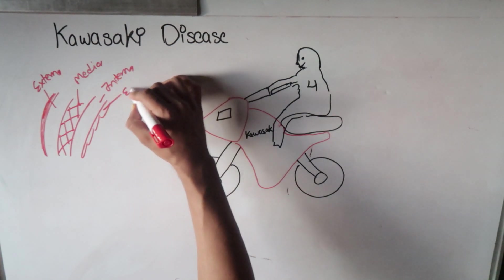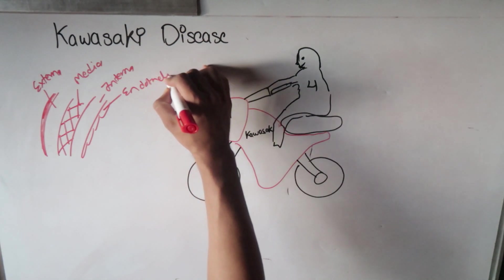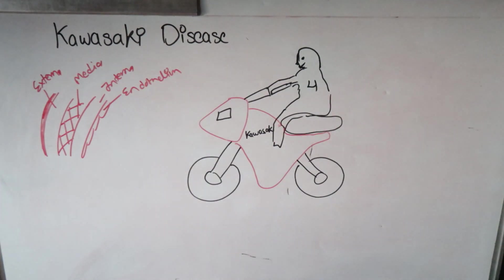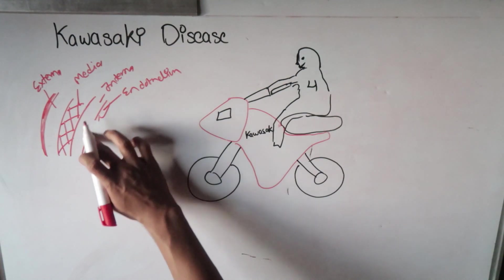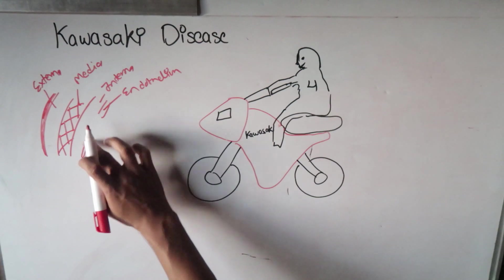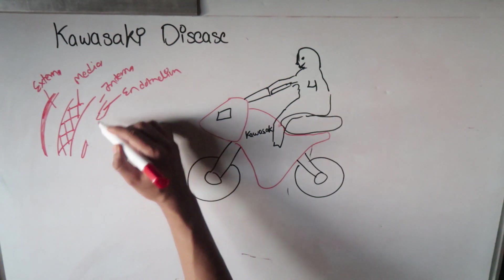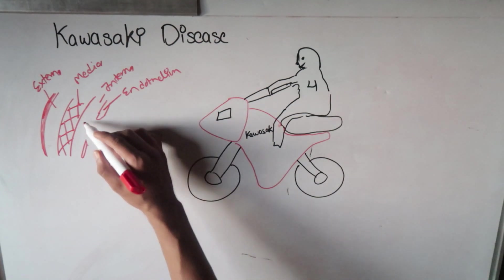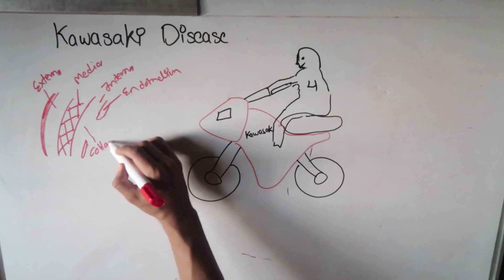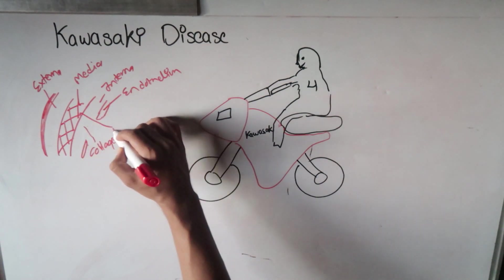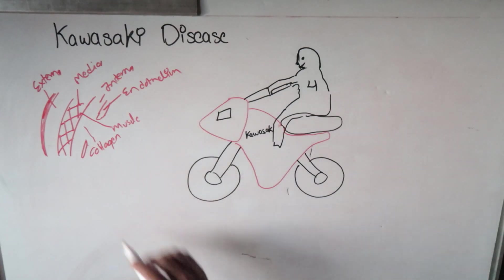Tunica interna consists of endothelium. In Kawasaki disease, the immune system of our body affects this endothelium layer. It disrupts this endothelium layer and there will be exposure of subendothelial tissue such as collagen or even this muscle layer. This will result in formation of blood clots and various inflammation processes.